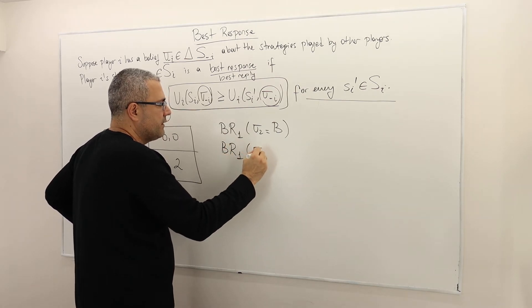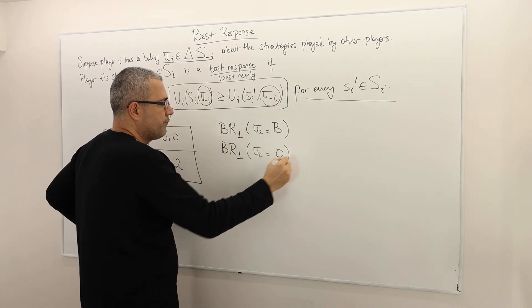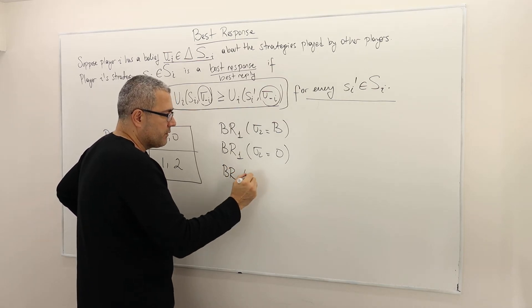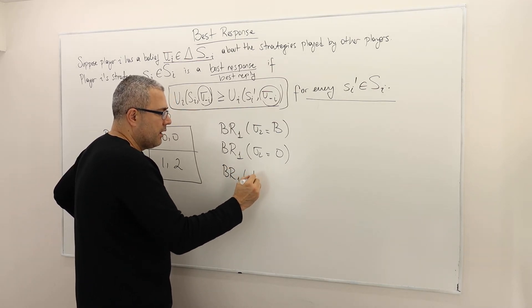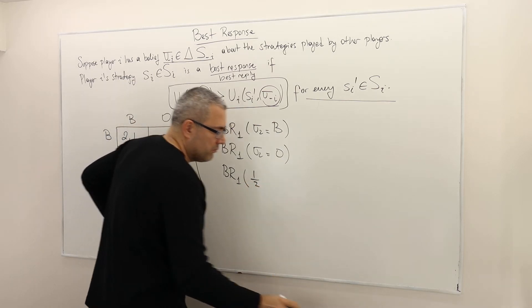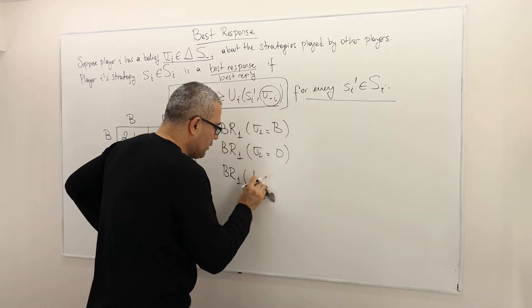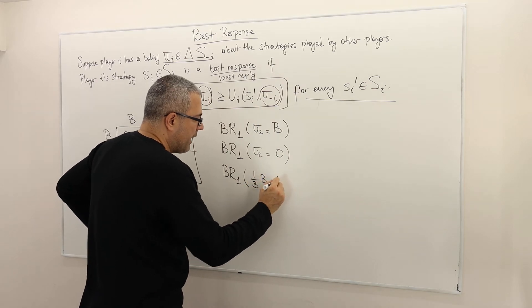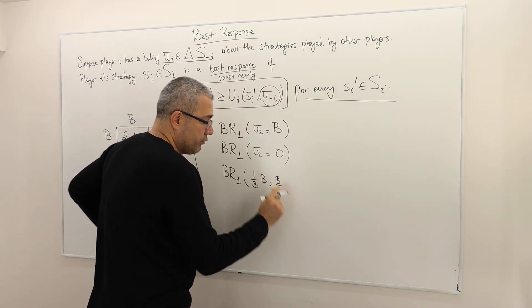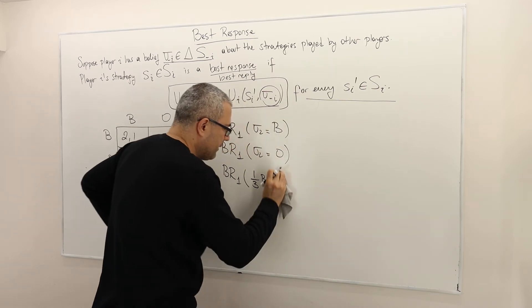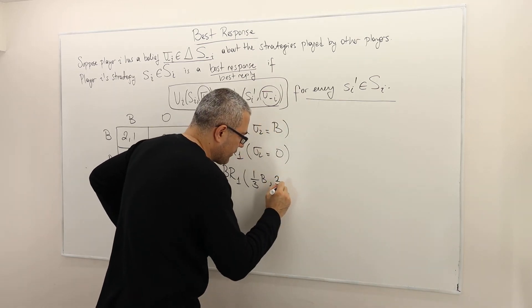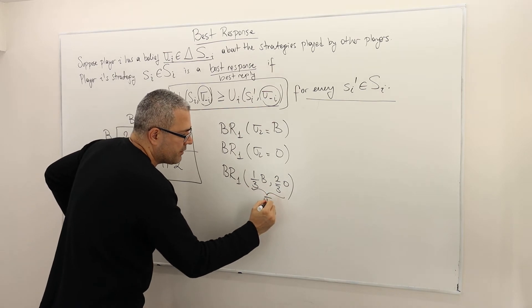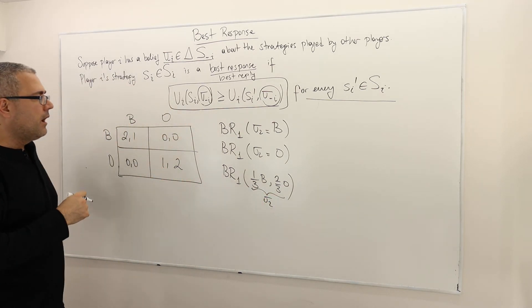What about his best response if his opponent is playing S? And what about his best response if his opponent is playing a mixed strategy — for example, one-third B and two-thirds S? That's sigma-2, a mixed strategy.